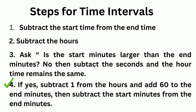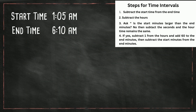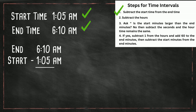I think once we work a couple of examples, it will make sense. The first one: the start time is 1:05 a.m. and the end time is 6:10 a.m. Step one, we're going to subtract the start time from the end time. Step two, we're going to subtract the hours. Six minus one is five.